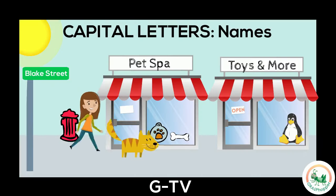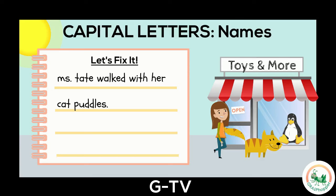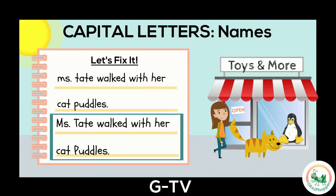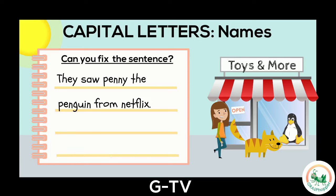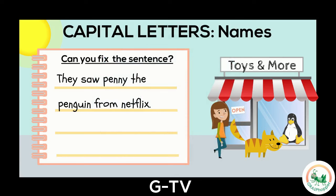Here is a sentence about a walk through town. Ms. Tate walked with her cat, Puddles. We can fix the sentence by writing a capital M in the prefix Ms., a capital T in the last name Tate, and a capital P in the cat's name Puddles. Now you give it a try and add capitals to the names in this sentence: They saw Penny the Penguin from Netflix. Pause the video to practice. Did you make a capital P in the words Penny and Penguin and a capital N in Netflix? Awesome job finding the capitals in names!